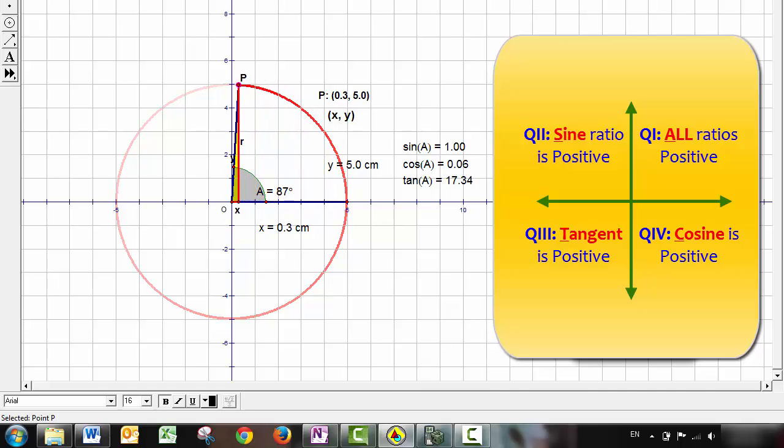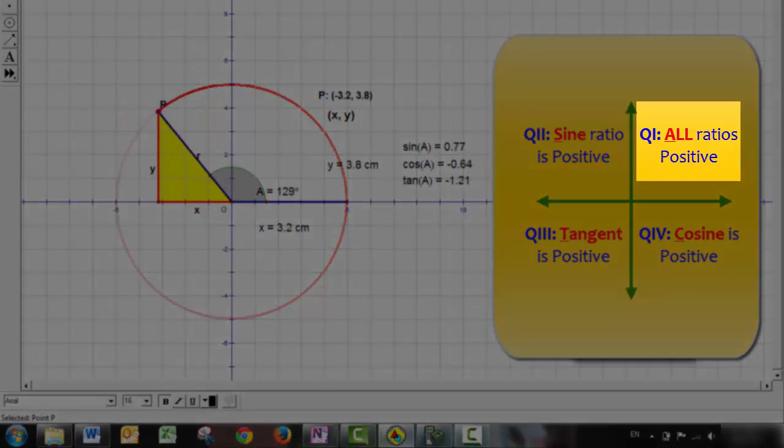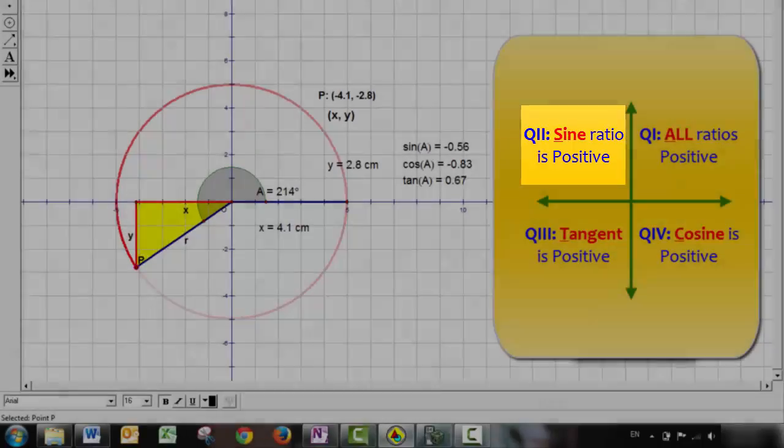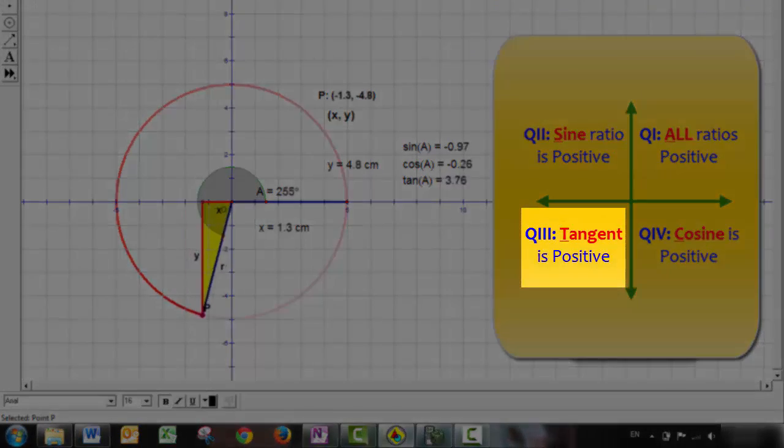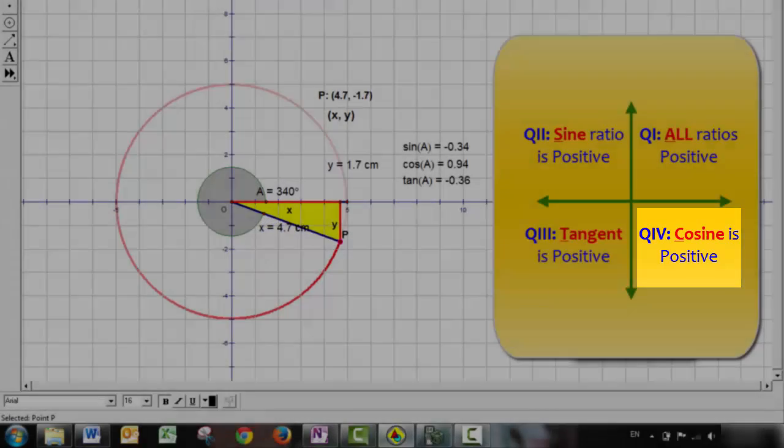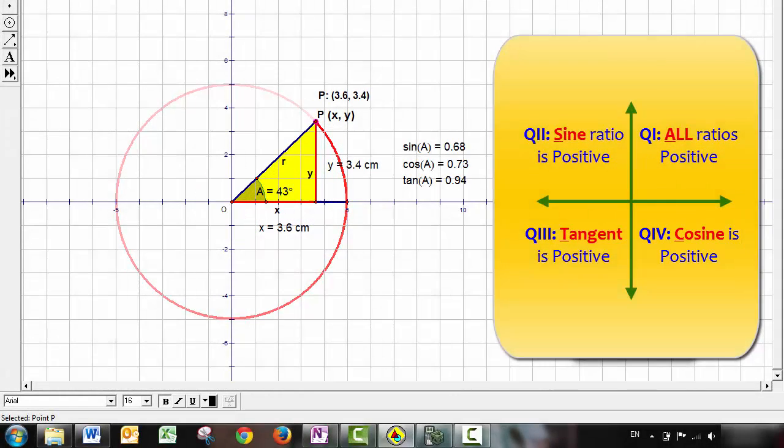So to recap, all of the angles are positive in quadrant one. In quadrant two, only sine is positive. In quadrant three, only tan is positive. And in quadrant four, only the cosine is positive. Each ratio has a quadrant where it is the only one that is positive, and this is important to remember.